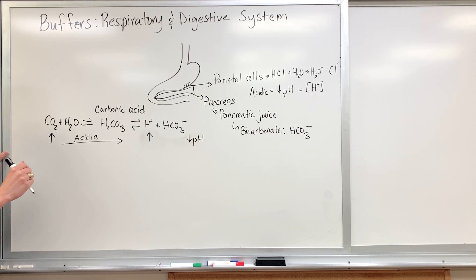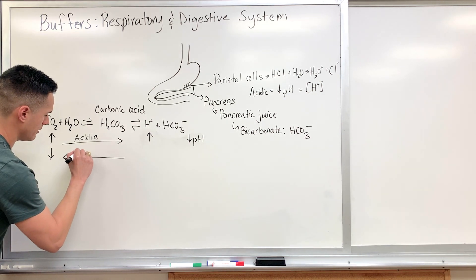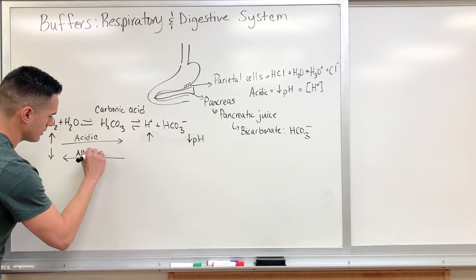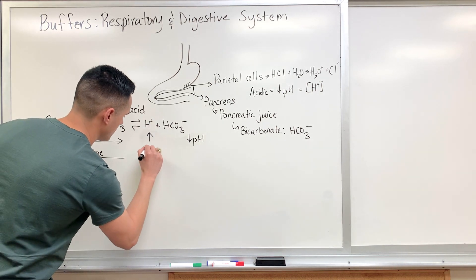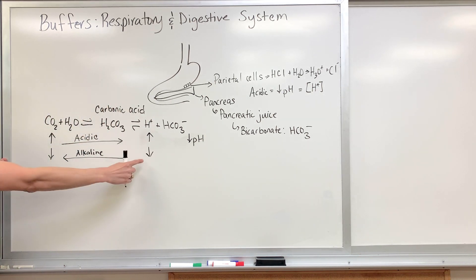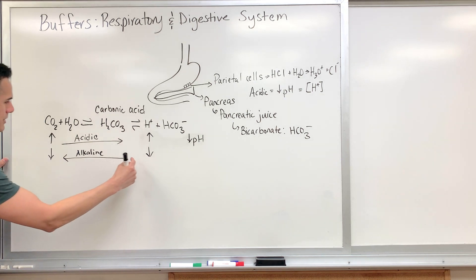Now, what happens when we decrease the amount of carbon dioxide? When we decrease the amount of carbon dioxide, it's going to push the equation this way. Therefore, the blood will become more alkaline because the proton concentration is decreasing.